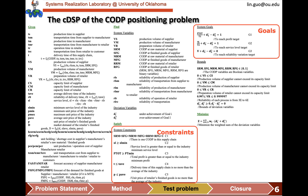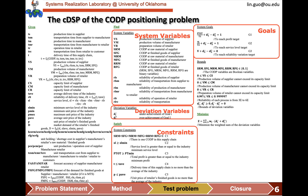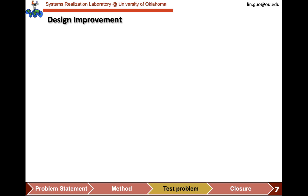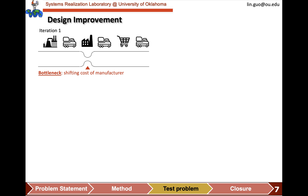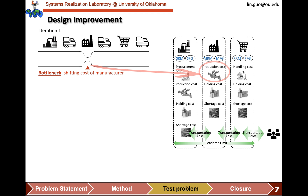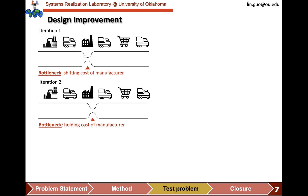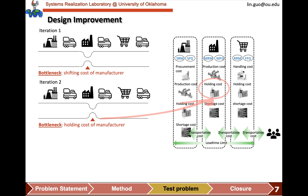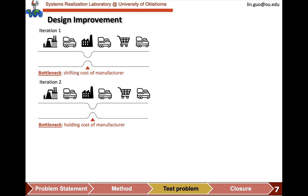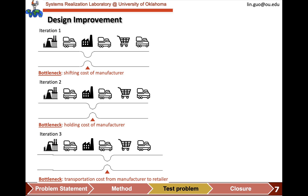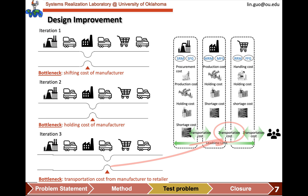Here are the goals, the constraints, and the variables. Here are our results in each iteration. First, we identify the shifting cost at the manufacturer is the bottleneck, so we take actions to relax the constraints. Then, we identify the holding cost at the manufacturer becomes the next bottleneck, so we take actions to reduce it. The next bottleneck is the transportation cost from the manufacturer to the retailer, so we address it accordingly, and so on and so forth.